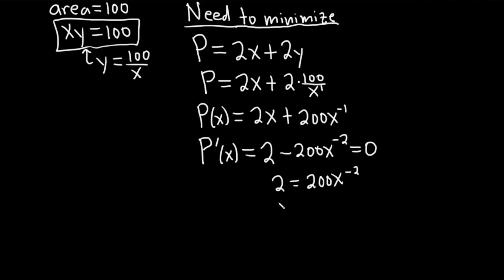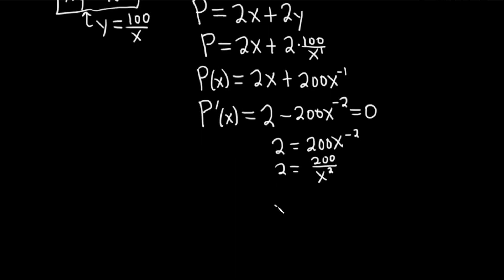And then we can bring that x to the negative 2 downstairs, so it will look like this, 200 over x squared, and multiply by x squared, that'll give us 2x squared, equals 200, and then divide by 2.